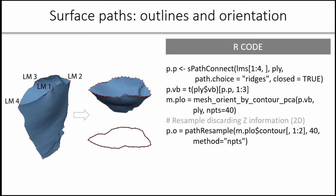What else can you do with these paths? One of the things you can do is extract outlines and orient them. This can be useful if you want to do shape analysis using elliptical Fourier, for example. I take these landmarks for the platform, then create a path using the SPathConnect function. This line extracts the coordinates from the mesh object of those vertices along the path.